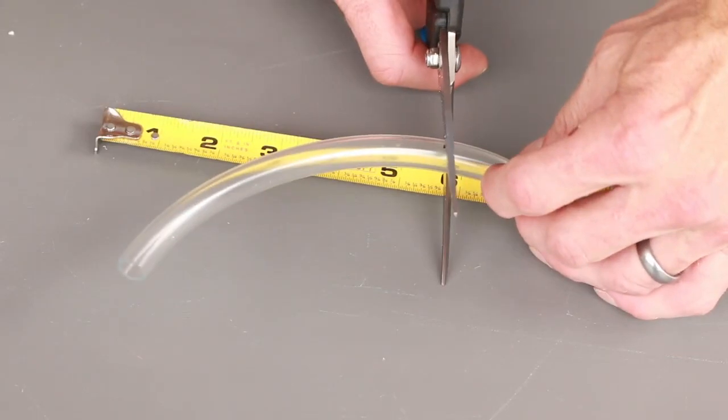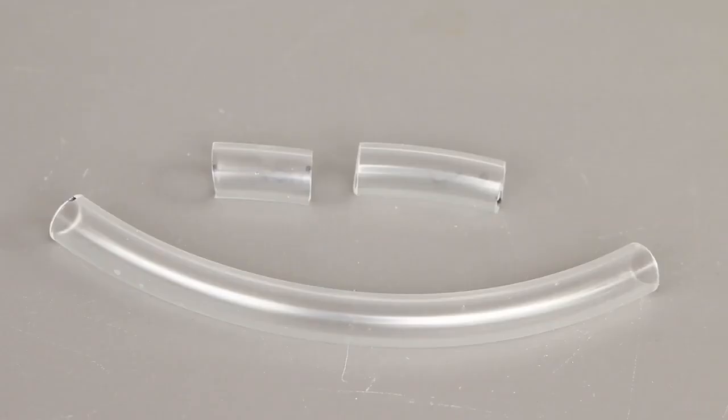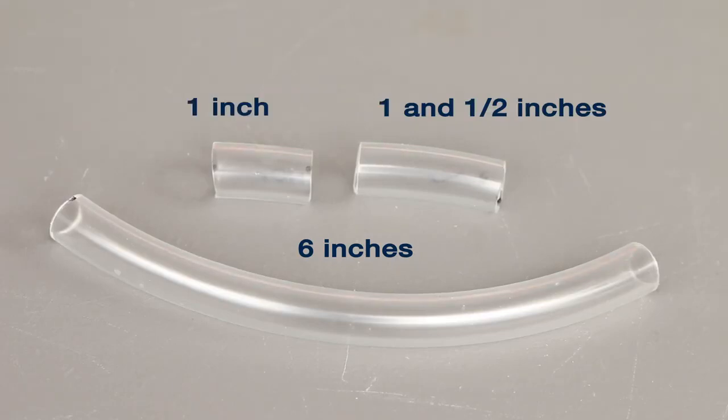Cut three pieces of the 3 eighths inch hose, one 6 inch piece, another 1 and a half inches long, and the last 1 inch.